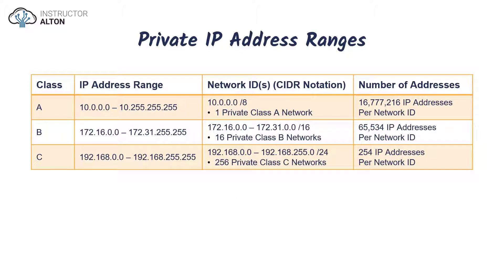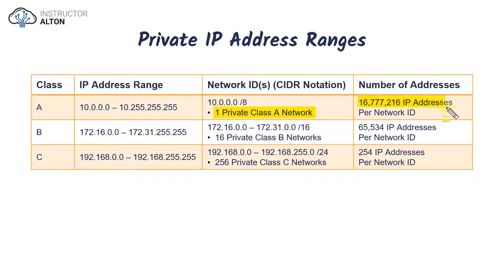Let's look at the different ranges that were defined. For Class A, a single private network was defined: 10.0.0.0 to 10.255.255.255. This is a single private Class A network, giving us 16.7 million addresses on that single private network, so as you can imagine it probably isn't used all that often.